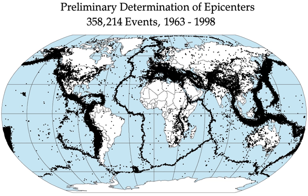Maximum magnitudes along many normal faults are even more limited because many are located along spreading centers, as in Iceland, where the thickness of the brittle layer is only about 6 km. There exists a hierarchy of stress level in the three fault types: thrust faults are generated by the highest, strike-slip by intermediate, and normal faults by the lowest stress levels.